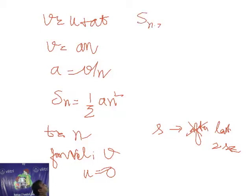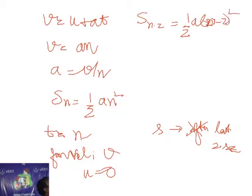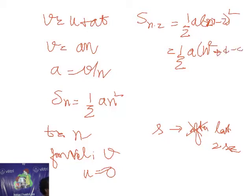The distance covered in n minus 2 seconds is half times a times (n minus 2) squared, which expands to half times a times (n squared minus 4n plus 4).